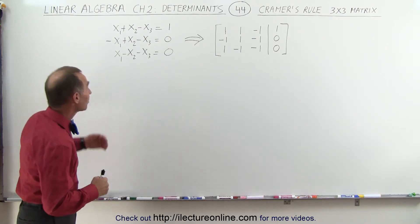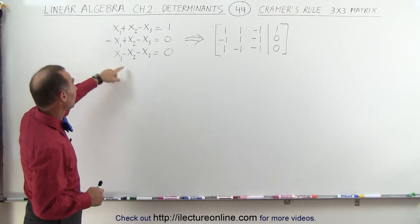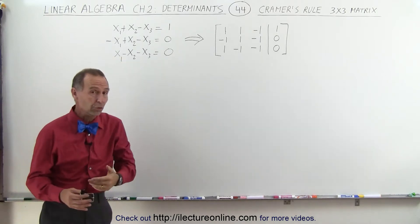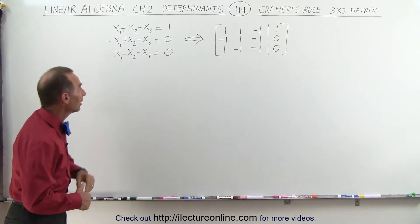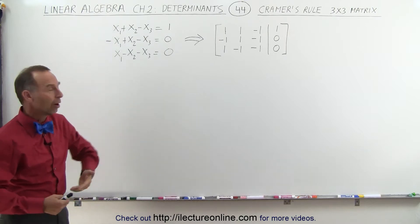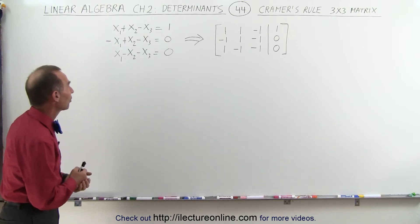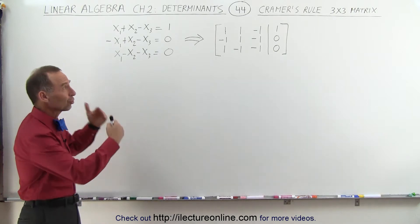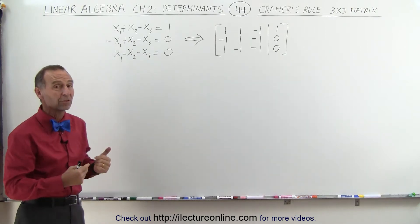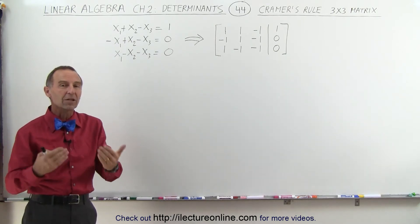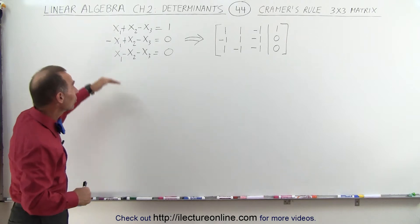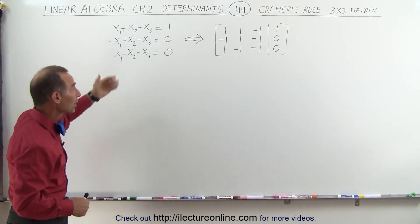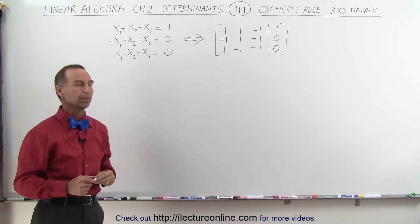We have a system of equations. The three variables are x1, x2, and x3 — we can also use x, y, and z; it doesn't matter. This is a more general format of three equations and three unknowns, kept simple to demonstrate the methodology of how to solve a linear system of three variables and three equations using Cramer's rule.